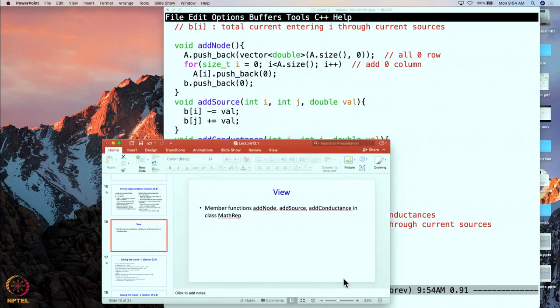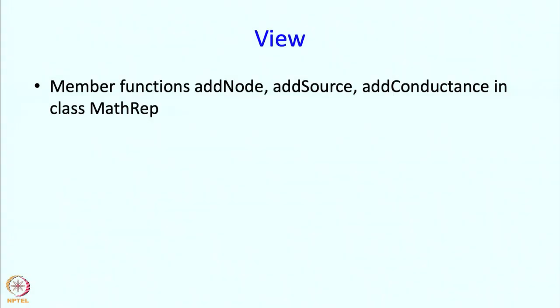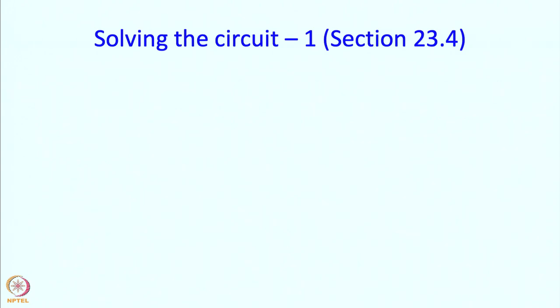Now we will talk about how to solve the circuit. Solving the circuit first requires us to find the voltages at the nodes. We represent the voltage at node i by x[i], where x is a vector and i is the index. Right now this is unknown to us.